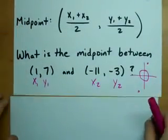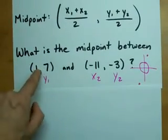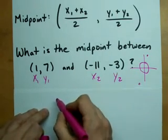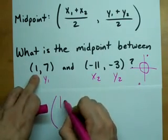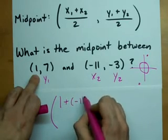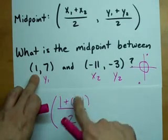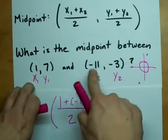I sure do. What is the midpoint between (1,7) and (-11,-3)? Well, according to this formula, it's 1 plus negative 11 divided by 2. See, the average of the two x values, 1 and negative 11.